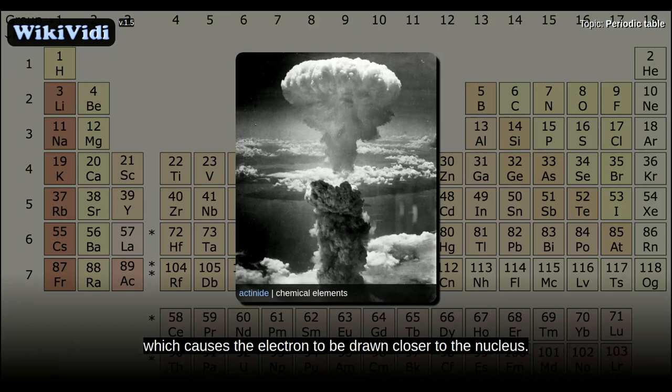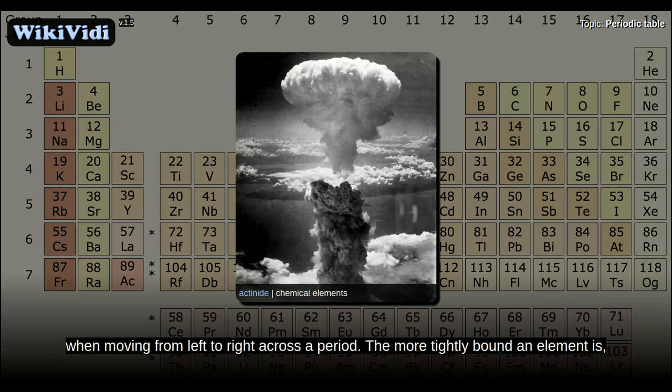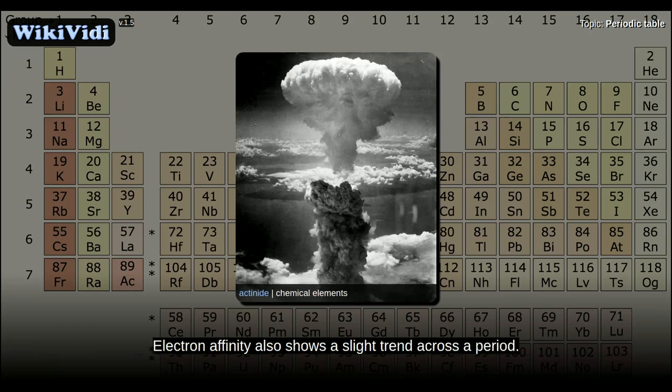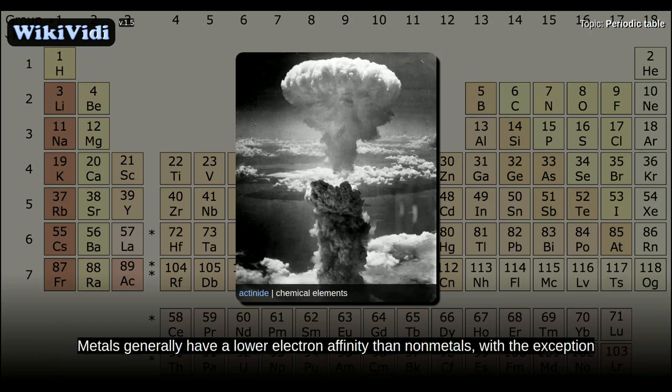This decrease in atomic radius also causes the ionization energy to increase — the more tightly bound an element is, the more energy is required to remove an electron. Electronegativity increases in the same manner as ionization energy, because of the pull exerted on the electrons by the nucleus. Electron affinity also shows a slight trend across a period. Metals generally have a lower electron affinity than non-metals, with the exception of the noble gases.